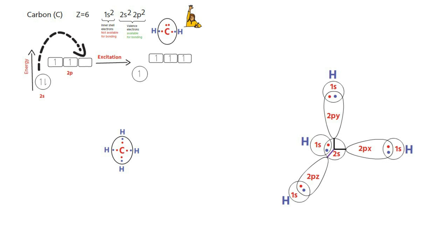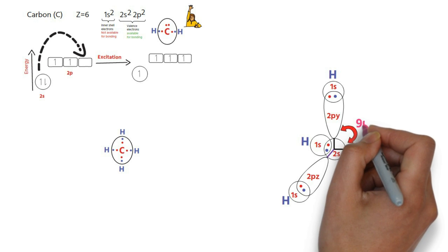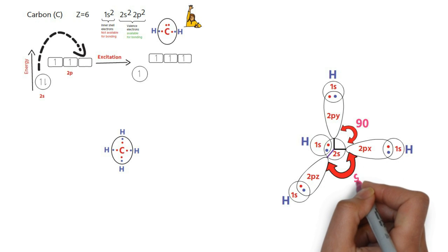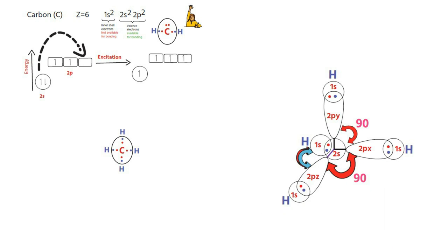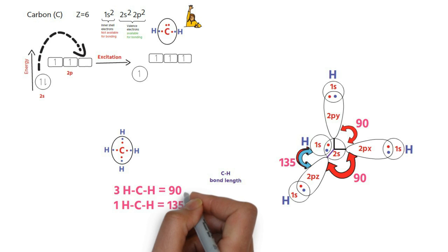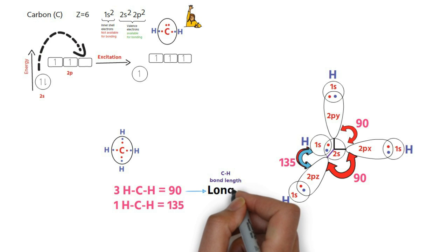This bond angle is expected to be 90 degrees, as are the other two. This one is expected to be around 135 degrees. Logically, the bond length of these three CH bonds should be longer than this one which is expected to be shorter.